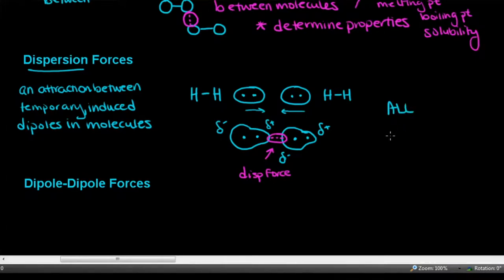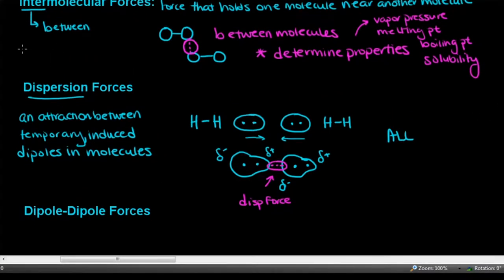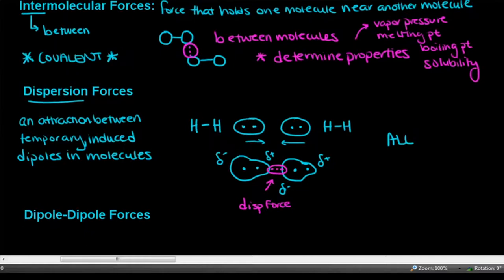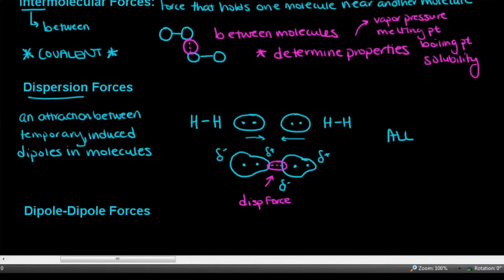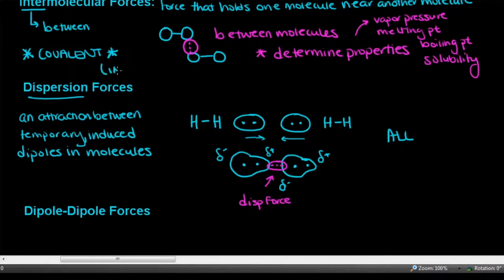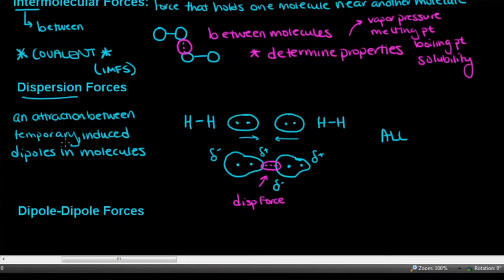All substances experience dispersion forces — even if a molecule is polar, it will additionally feel some dispersion force when molecules come near one another. These IMFs — intermolecular forces — are only for covalent molecules. Ionic compounds have a crystal lattice structure holding them together; metals have a sea of electrons. What holds together covalent compounds are these IMFs. Dispersion forces are the weakest of the three IMFs we will discuss today.